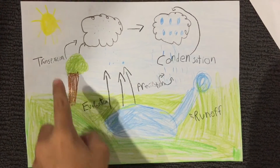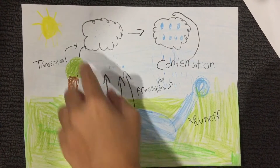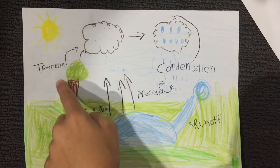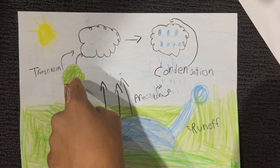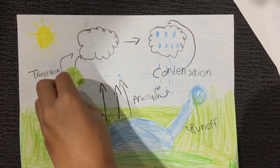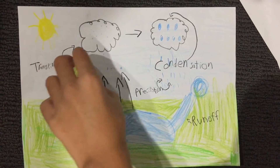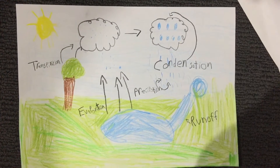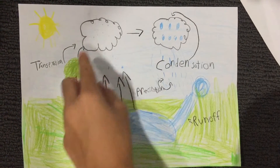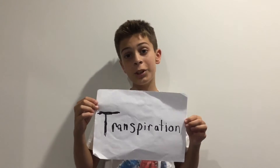So next it's transpiration. It's the same thing as evaporation — the sun heats it up — but this time all the water is in the plants, and the water evaporates from the plants up into the clouds. So it's almost like evaporation, but it evaporates not from a lake but from the plants. So that was transpiration.